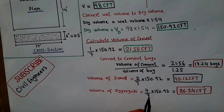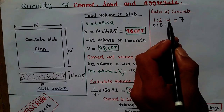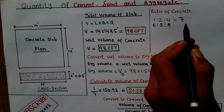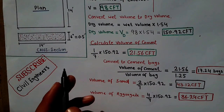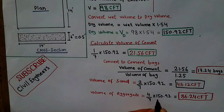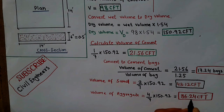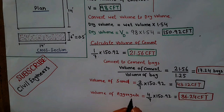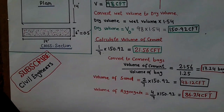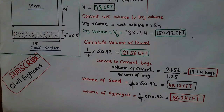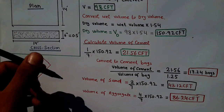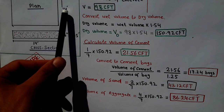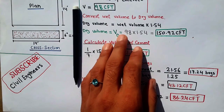For the volume of aggregate: aggregate ratio is 4, and sum of ratio is 7. So volume of aggregate = (4 ÷ 7) × 150.92, which gives you 86.24 CFT. If you like my videos, please subscribe for more videos — subscribe Savele Engineer. All the best, take care, bye.